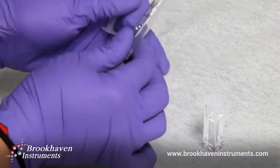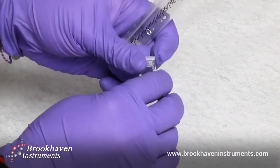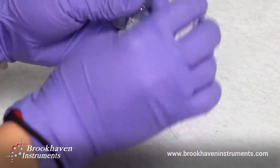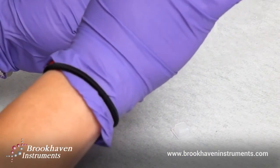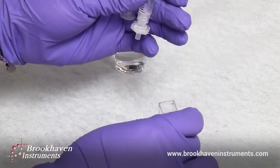In this case, the contaminants and dust particles can be filtered out. For this sample, the best filter size choice is a 0.02 micron filter.